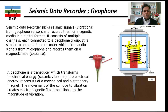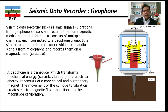Let's start with the geophone, which is normally used for the land case and for small-scale surveys. The seismic data recording system picks the seismic signal or vibration from the geophone sensor and records them in magnetic media in a digital format. It consists of multiple channels, each connected to a geophone group via a cable. For example, 24 geophones would be connected with one cable, and in some large surveys there are hundreds of geophones. It is similar to an audio tape recorder which picks audio signals from a microphone and records them on magnetic tape.